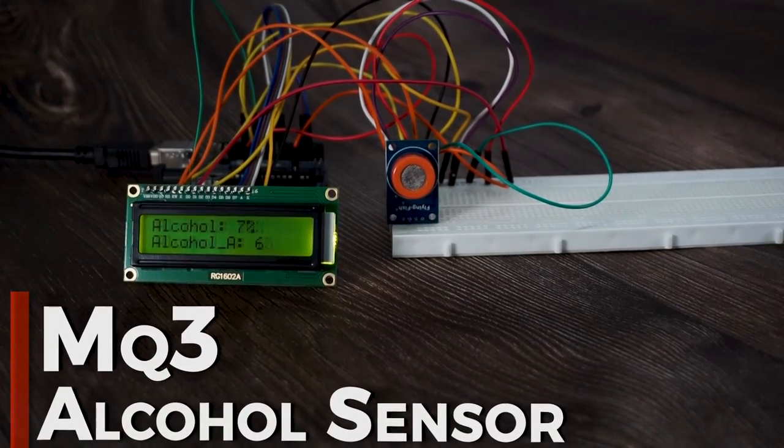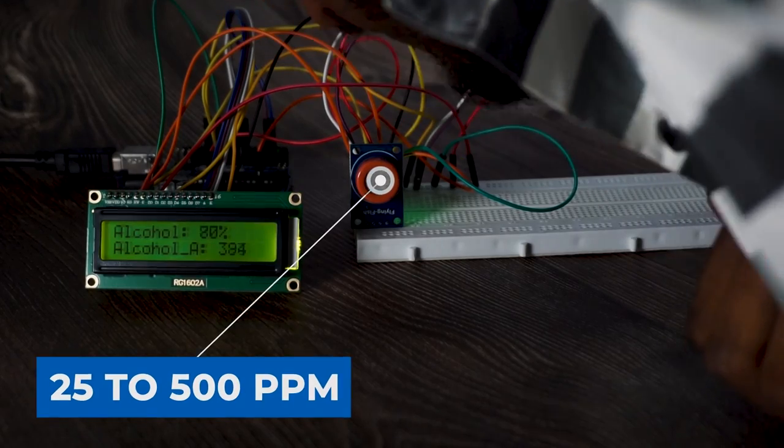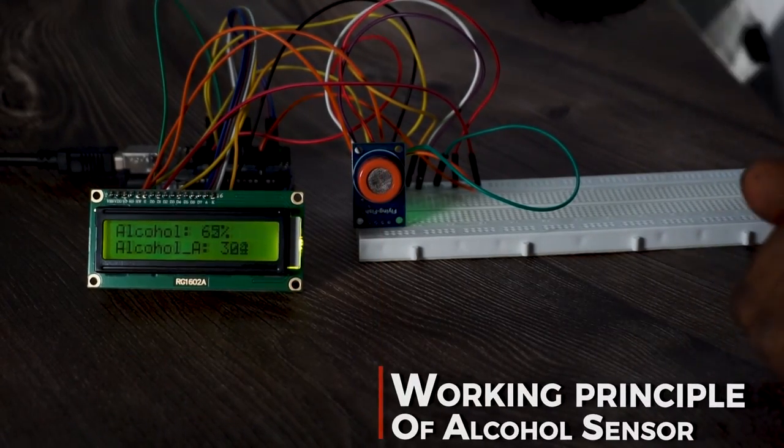This alcohol sensor can detect alcohol concentrations anywhere from 25 to 500 ppm. Let us now see the working principle of this sensor.